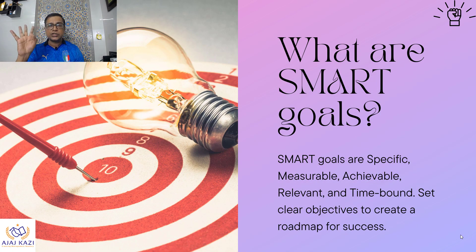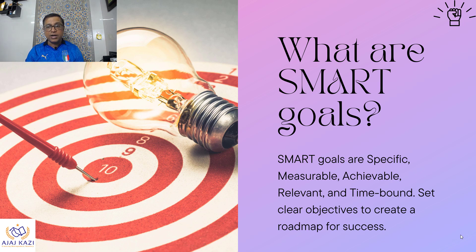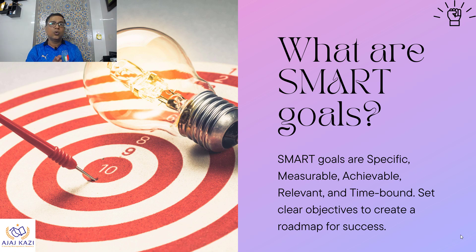Let us look at what smart goals are. Smart goals are: S for specific, M for measurable, A for achievable, R for relevant, and T for time-bound. This is a complete method for setting goals.